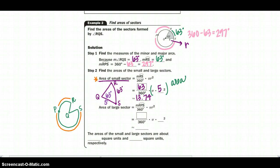Alright, so next I'm going to move on to my larger sector, and my larger arc would be rps. So I found that to be 297 degrees over 360 times my area, which would be pi times 5 squared. After I did that in my calculator, I'd come out with approximately 64.80. So the areas of the small and large sector are about 13.74 square units and 64.80 square units.